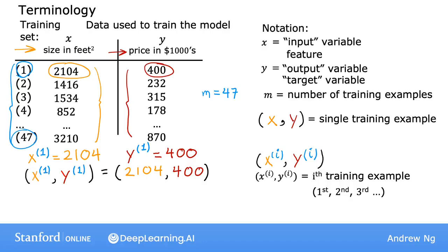Just a note, this superscript i in parentheses is not exponentiation. So when I write this, this is not x squared. This is not x to the power of 2. It just refers to the second training example. So this i is just an index in the training set and refers to row i in the table.